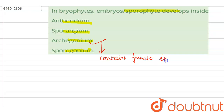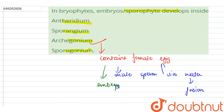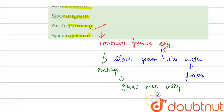The male sperm, or male gamete, reaches the egg via water, and fertilization or fusion occurs here. Then the embryo or sporophyte grows here itself and is dependent on the gametophyte.